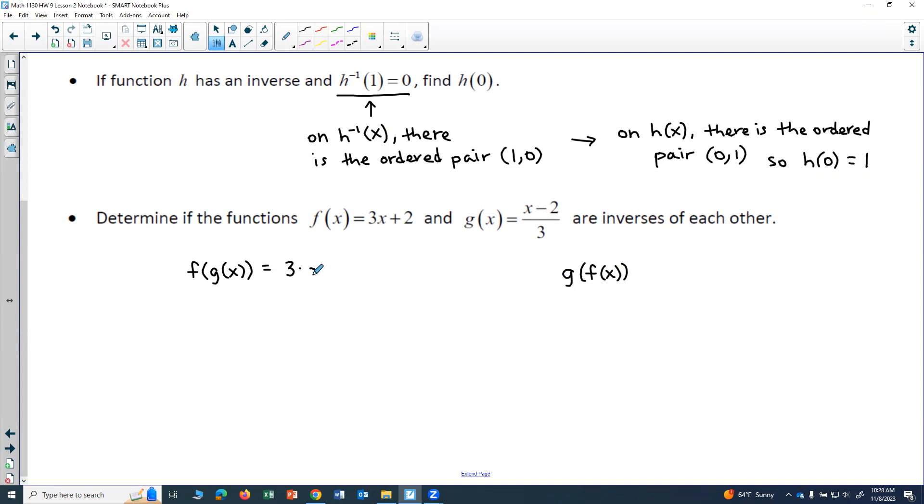So I'll go ahead and plug in g of x into my f function. So I'm going to get 3 times g of x plus 2. And g of x is (x minus 2) over 3, so I'm going to get 3 times (x minus 2 over 3) plus 2. I'll go ahead and put the (x minus 2 over 3) in parentheses. Now I have 3 in the numerator and in the denominator, so those 3s are going to cancel each other out.